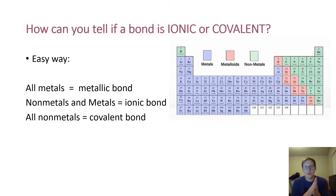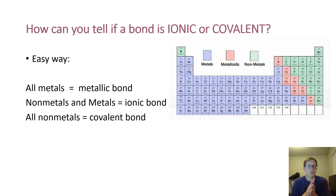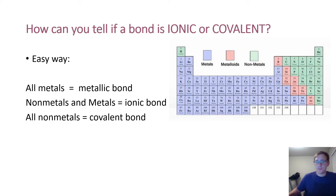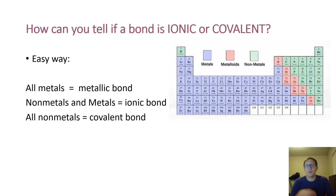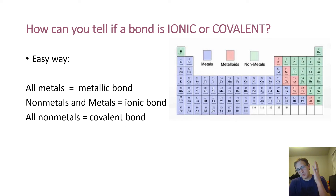There is an easier way to determine bond type. A metallic bond is when a metal bonds to another metal — make sure you know that for your test. For ionic bonds, you take non-metals bonded to metals. On my periodic table, the blue color represents metals and green represents non-metals. So whenever you have something on the left side of the periodic table bonded with something on the right side, that's when you get ionic bonds. Covalent bonds only happen when you bond non-metals to other non-metals.